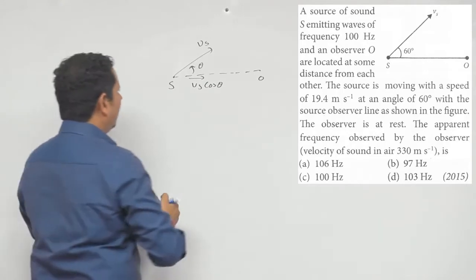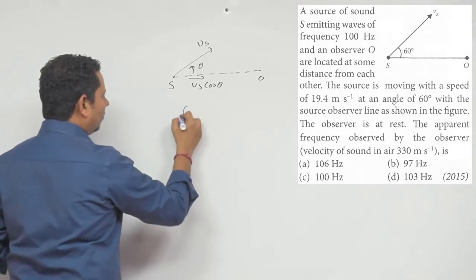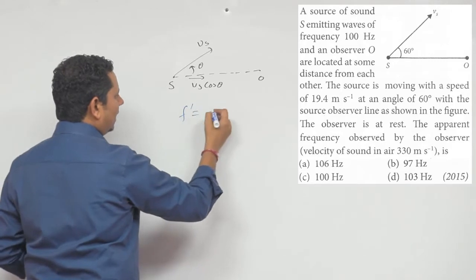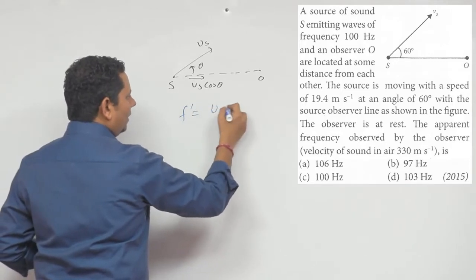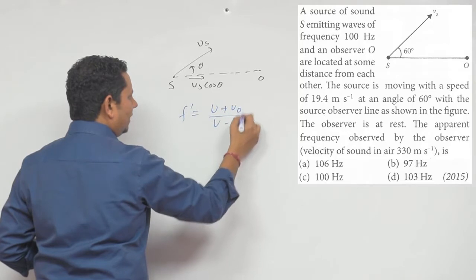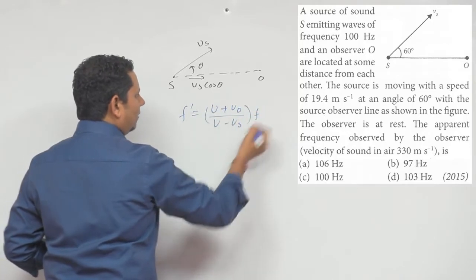Based on this, we can say that we can put a Doppler effect formula directly F prime value V plus VO divided by V minus Vs multiplied by F.